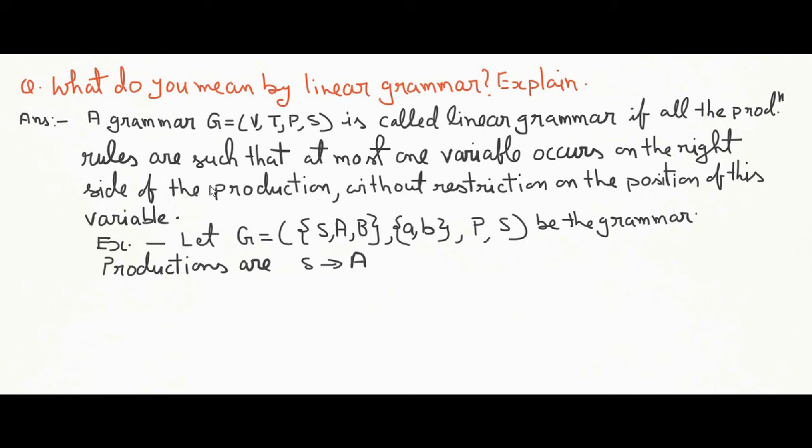S is rewritten as A, A is rewritten as aB or lambda, and B is rewritten as Ab. These are the productions and you can see at most one variable is on the right side of every production. So this is an example of linear grammar.